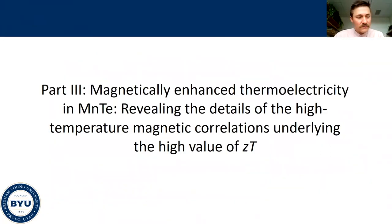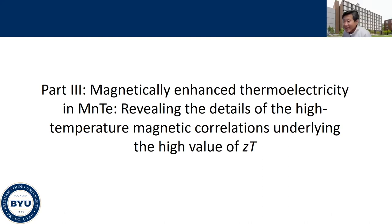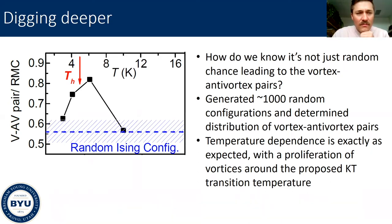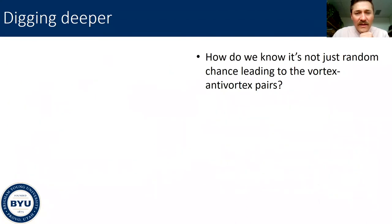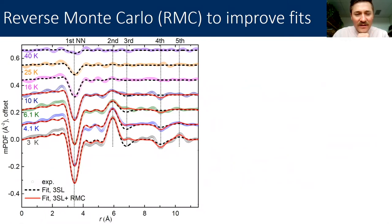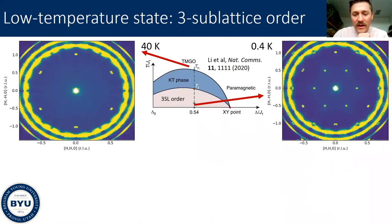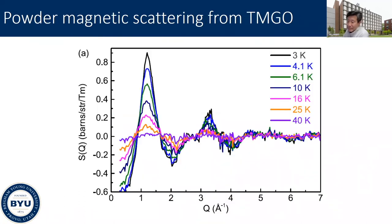Let me spend just a few minutes on manganese telluride — this is a pretty drastic shift in gears. Question from audience: In the previous material, how large a magnetic field do you need to turn everything into a ferromagnetic (parallel) configuration? I believe a little above 5 Tesla — it takes several Tesla to force it out of all the frustrated order and into a saturated state. I need Zhiling Dunn to bail me out here, but that's my recollection.